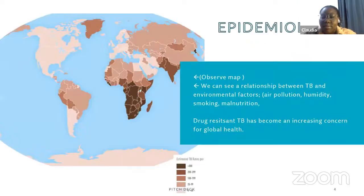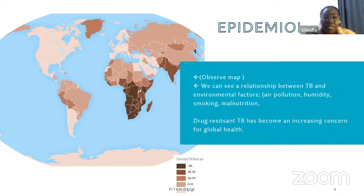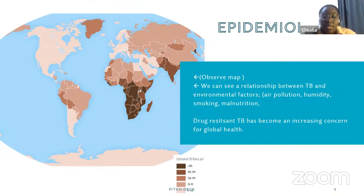Latent infection means you can get the bacteria but you're not necessarily able to transmit it, and you don't experience any symptoms at that given moment. Looking at this map, you can see the amount of tuberculosis infections according to the darkness of the color — in many southern African countries the number of infections is much higher compared to western or more developed countries. You can see the relationship between tuberculosis and environmental factors.